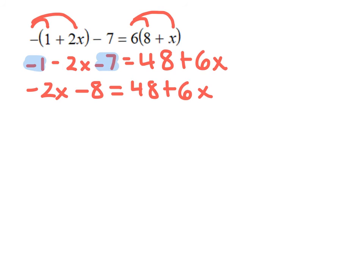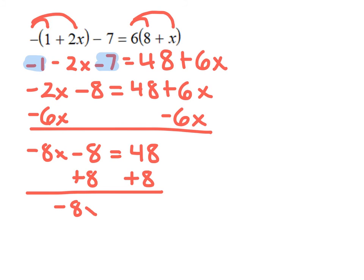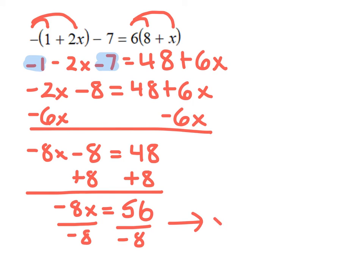Next, I bring all variable terms to the left side by subtracting 6x from both sides, giving negative 8x minus 8 equals 48. Then I bring the constant terms to the same side by adding 8 to both sides, giving negative 8x equals 56. Finally, I divide both sides by negative 8, which gives x equals negative 7.